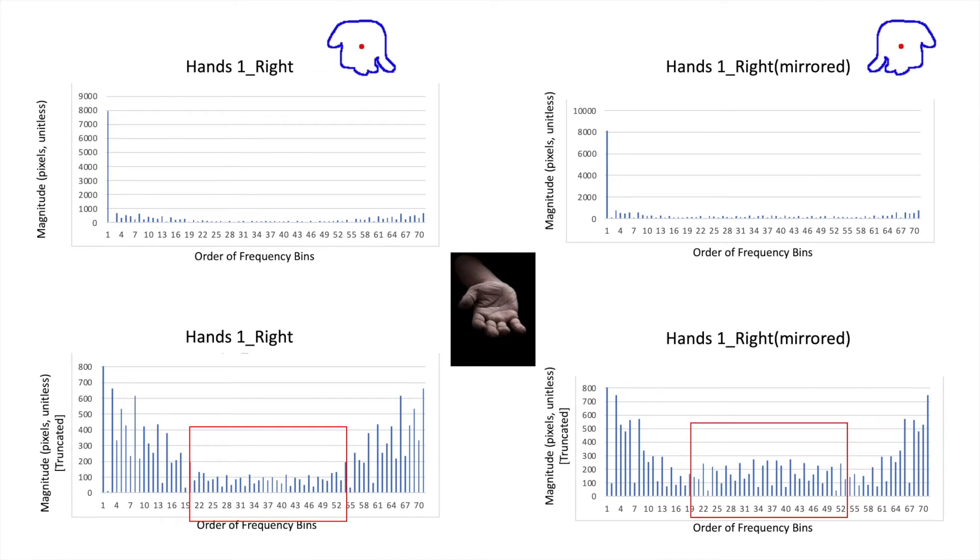Here are the frequency plots of a right hand and its mirrored image. For the bar graphs, the top row shows bird's eye views of the frequency plots. Below shows truncated graphs that allow us to examine the smaller bars. You can see there is a difference in magnitudes between the middle sections, which are outlined in red.